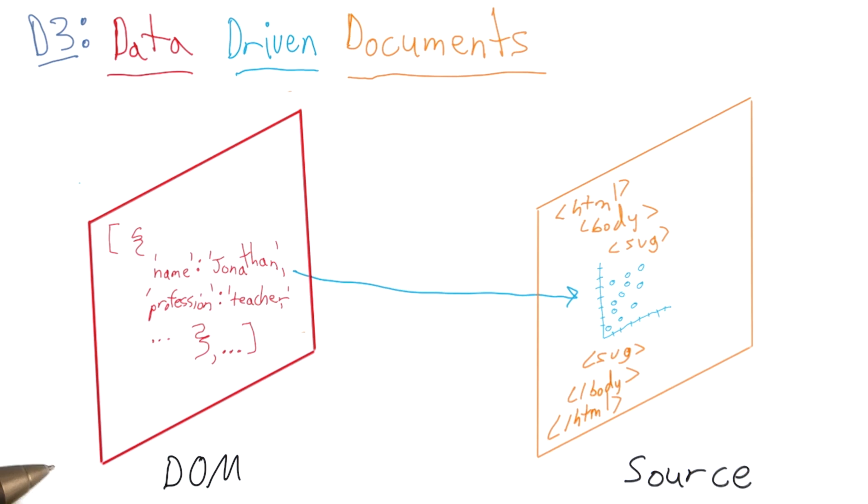But since the DOM actually represents, it can interact with what's displayed visually. When we bind data to the DOM, D3 drives the document. In this case, the visual representation of the DOM, and creates a chart based on the data that's in the DOM.